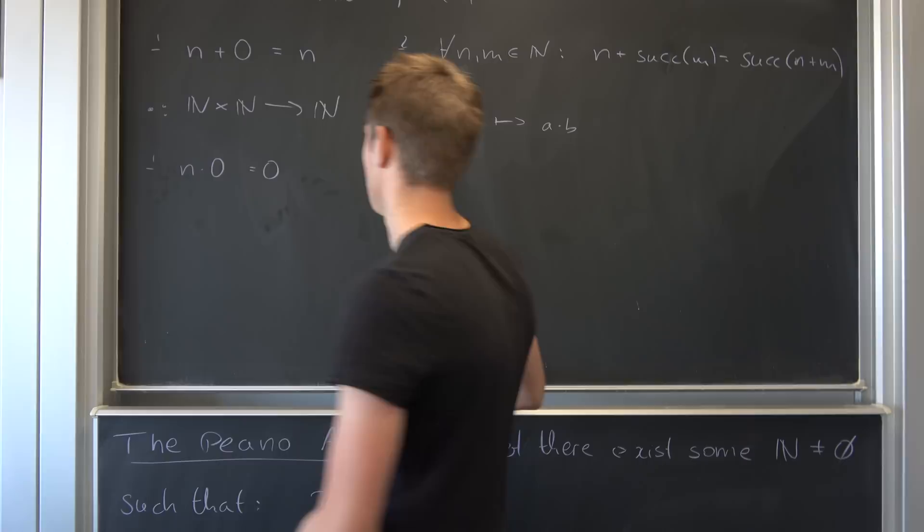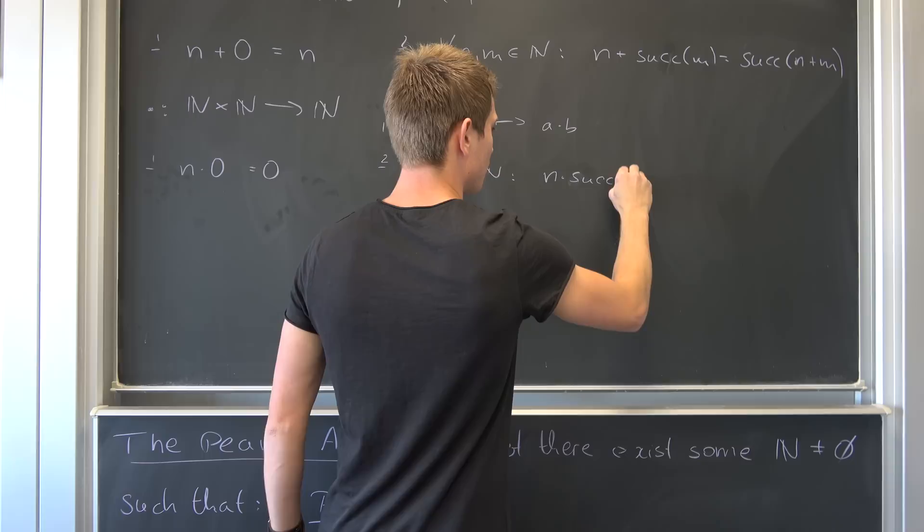And there's also a second little rule, and you can think about this for yourself once again. So for all N and M element of natural numbers, what do we have? Well.